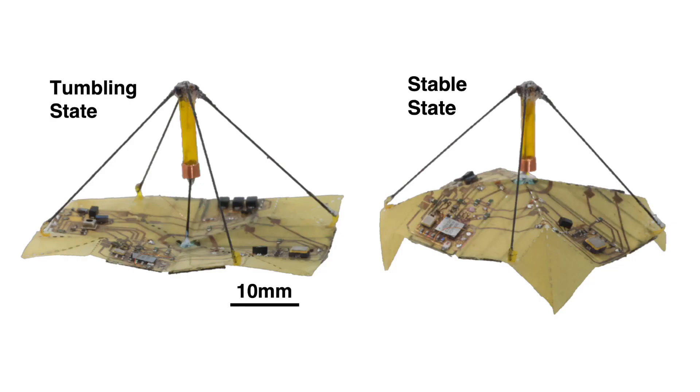We discovered that these two states have dramatically different falling behaviors. In one shape, they tumble chaotically in the wind like elm leaves, whereas in the other state, they have a stable and graceful descent like a maple leaf.